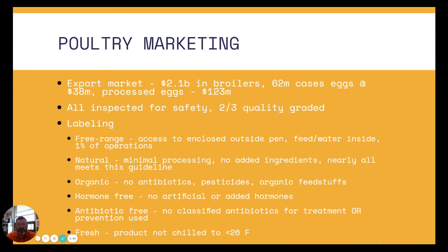Of course, there's a whole lot of labeling that goes on. About 1% — if they're labeled free-range, it's only about 1% of the operations that are outside the pen. It's actually a very low fraction in order to be allowed to be labeled as free-range. Natural means minimal processing, no added ingredients, and pretty much everything meets this guideline. So the use of 'natural' on a label is quite liberal, so to speak.